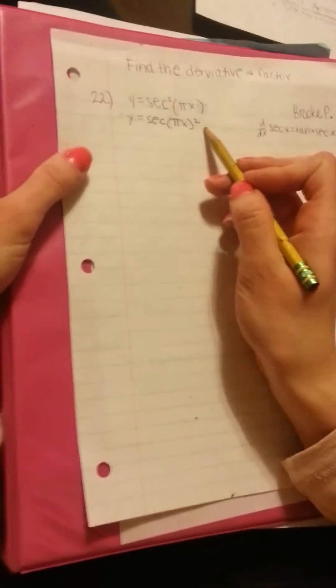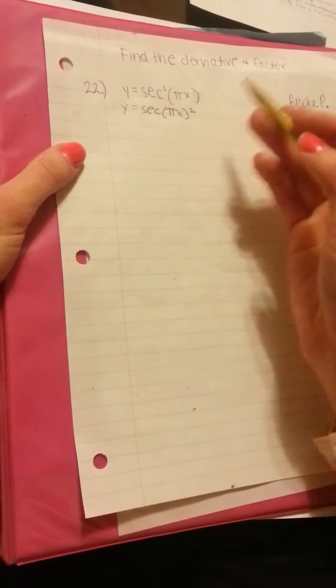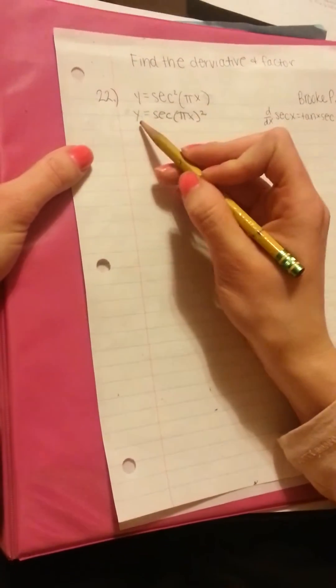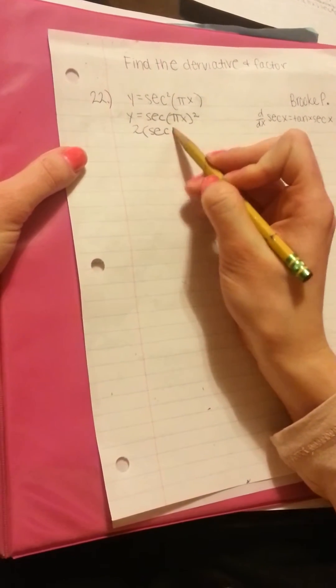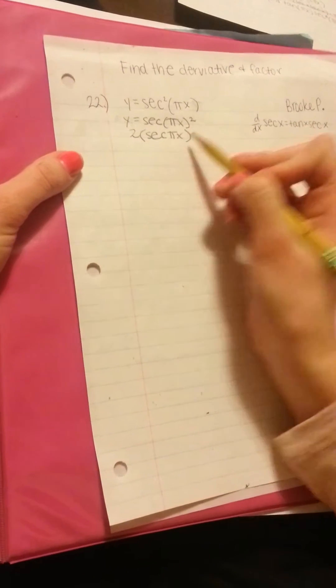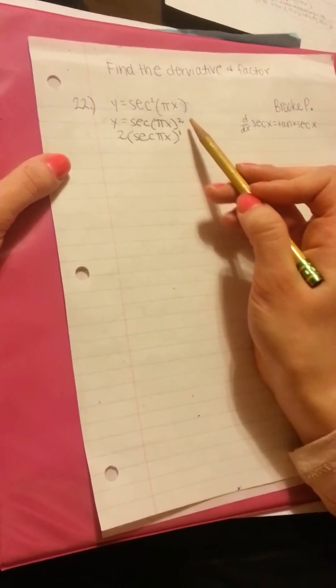Alright, from here we're going to use the power rule. First we're going to bring down the 2. It's going to become the coefficient. And then we're going to do secant pi x, and then it's going to be to the first power now because we minused 1 from 2.